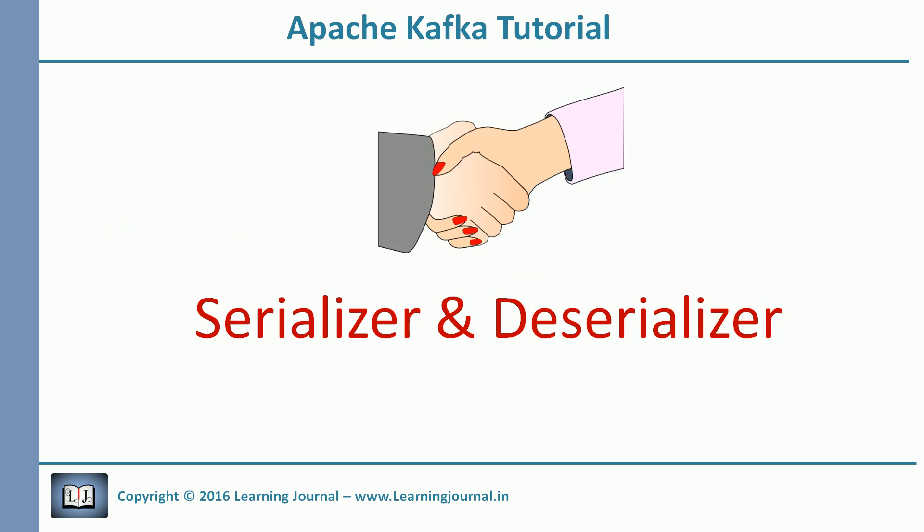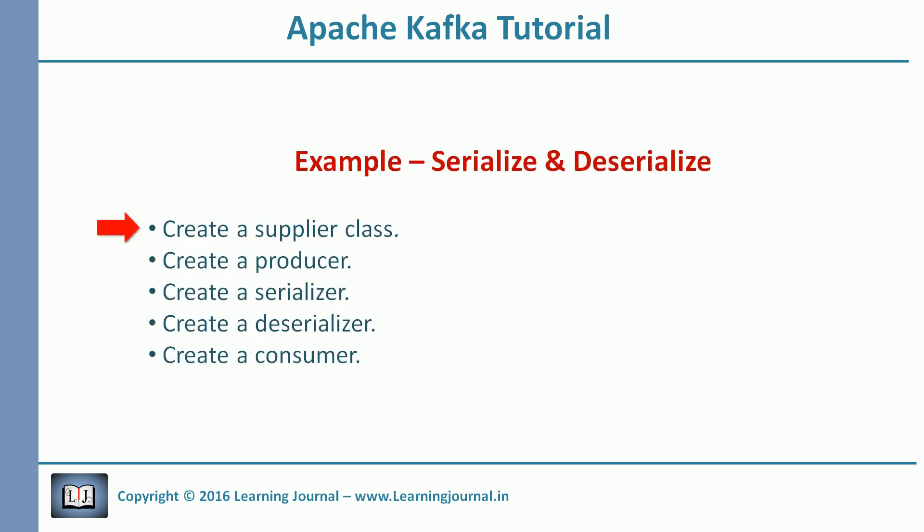To understand the idea of serializer and deserializer, we need to create an example. In this example, we will do the following things. We will create a supplier class, serialize this supplier class, and send the supplier object as a message to Kafka. Then we will create a producer. This producer will send the supplier object as a Kafka record. Earlier we were sending strings, but in this example we are going to push an object instead of a simple string.